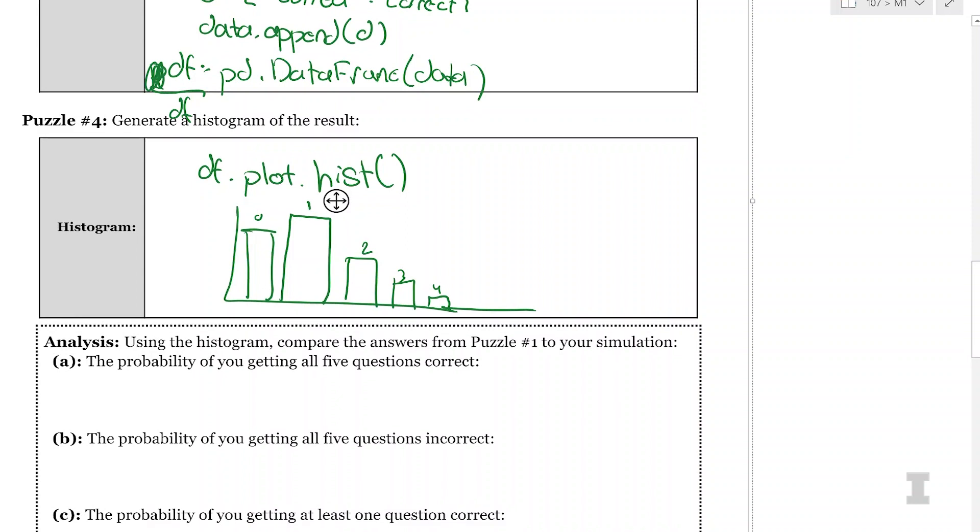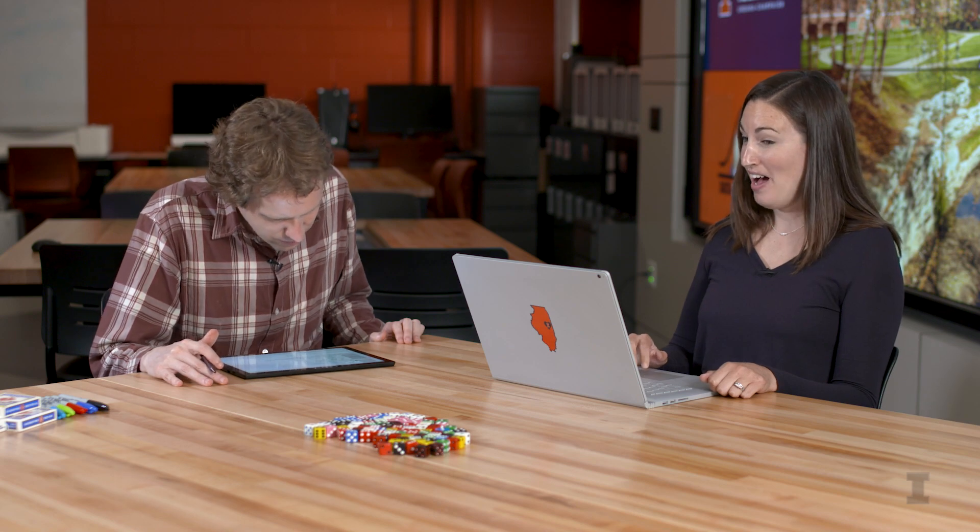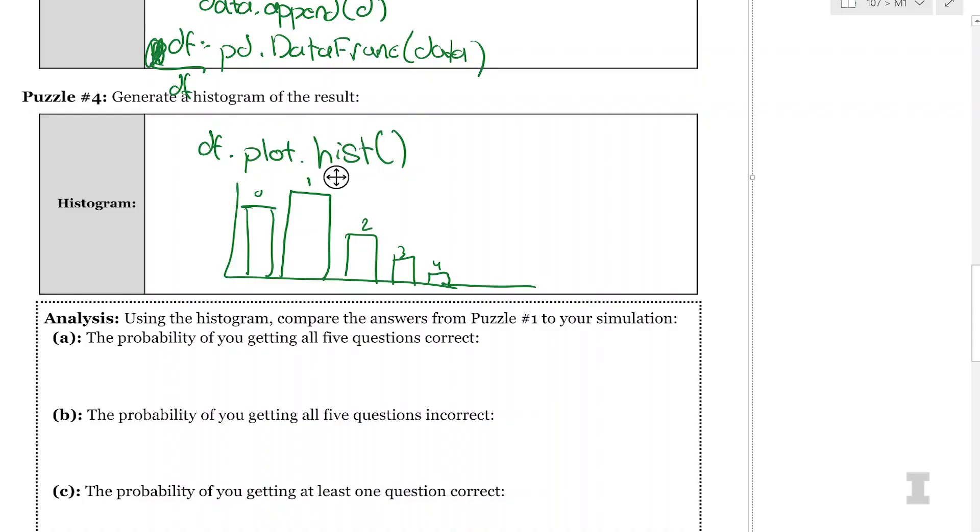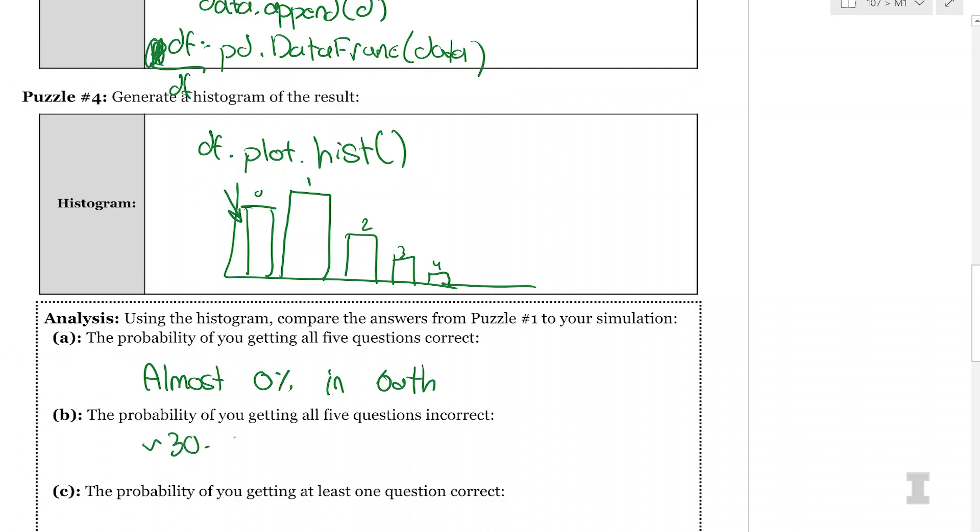So using the histogram and compare our answers from puzzle number 1 to our simulation. The probability of getting all 5 answers correct. So we expected the probability, based on the statistics you did, was way, way, way less than 1%. And in the histogram, do we even see anything for 5? I don't even see a bar at 5. So we see that it's almost 0% in both. So the probability of getting all 5 questions incorrect. We see that that is a non-zero probability. We're looking at the zero histogram bar. And it looks like it's maybe around 30 to 40%.